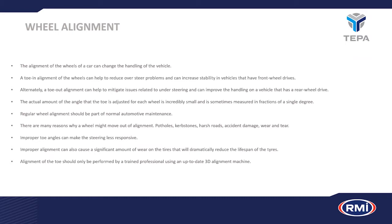Improper toe angles make steering less responsive — too much toe-in or toe-out and you'll be fighting the steering wheel. Improper alignment also causes significant tire wear: too much toe-out shreds the inner edge of tires, too much toe-in wears the outer edge. The toe is a specification set by engineers given the movement and flex of the suspension during acceleration and deceleration.